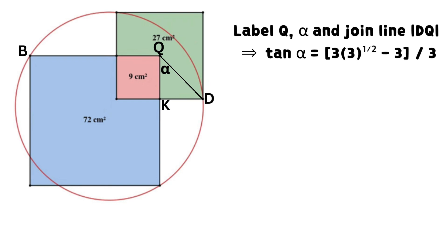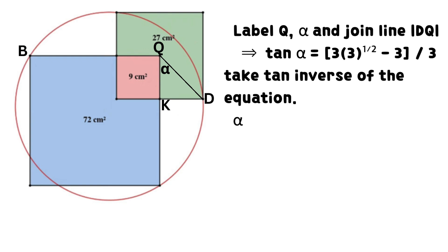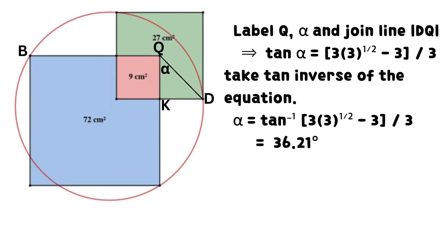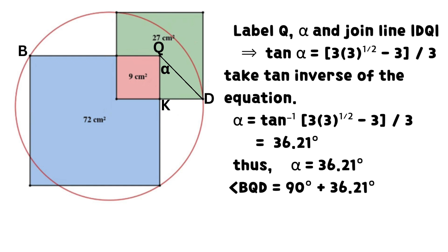Label Q and alpha, and join line DQ. We have an equation in tan alpha as shown on the screen. Take the tan inverse of the equation so that alpha = 36.21 degrees. Angle BQED equals the sum of 90 degrees and 36.21 degrees, which equals 126.21 degrees.